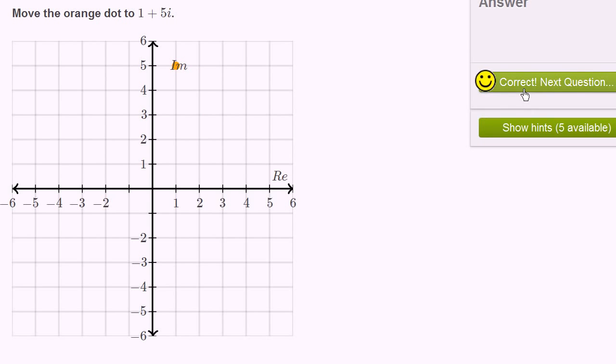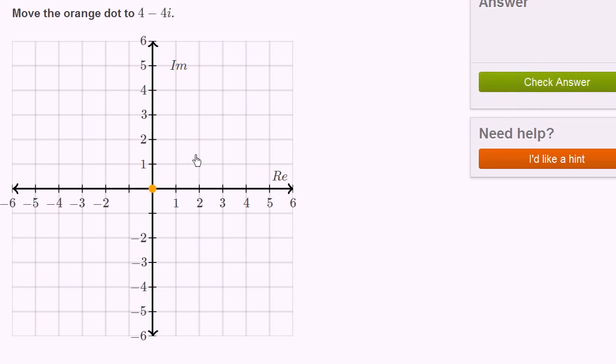All right, let's do one more of these. 4 minus 4i. Real part is 4, imaginary part is negative 4. And we're done.